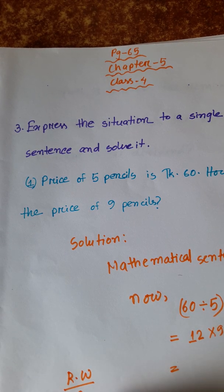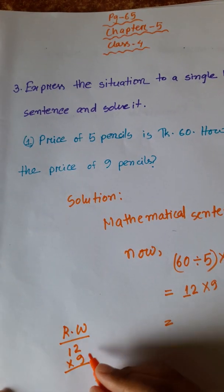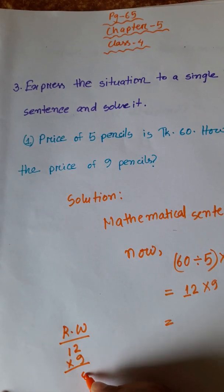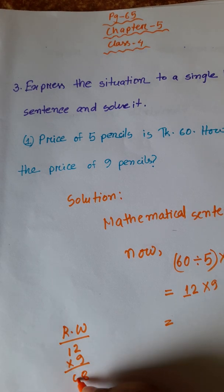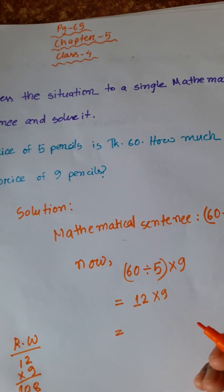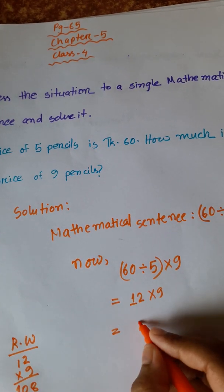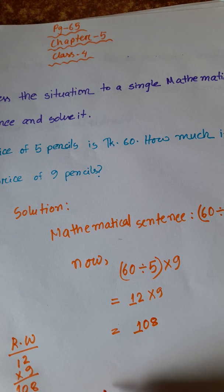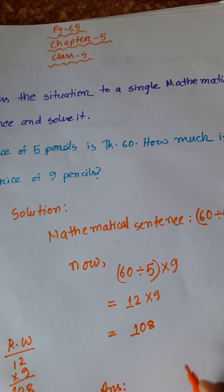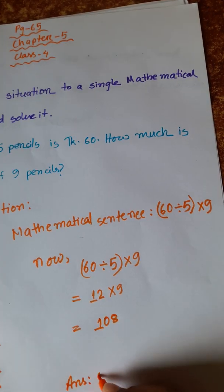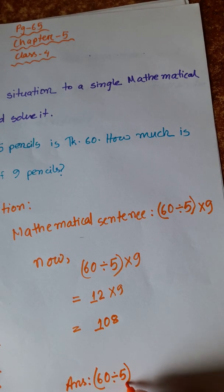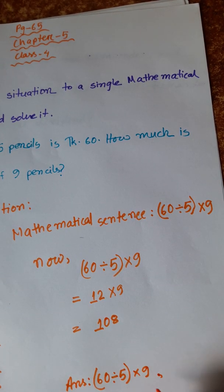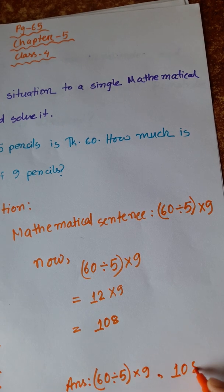12 into 9: 9 twos are 18 carry 1, 9 ones are 9 plus 1 is 10, so 12 into 9 equals 108. The answer is 108. So: 60 divided by 5, into 9 equals 108.